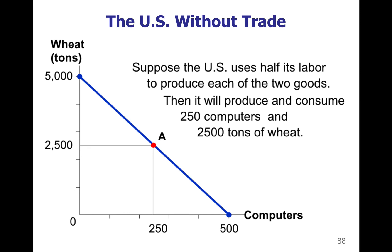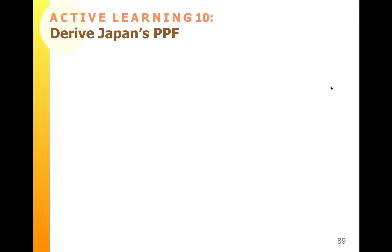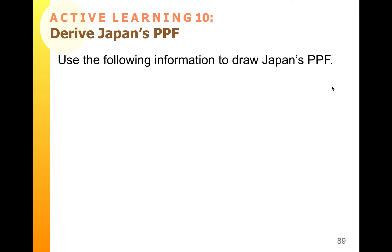So if we decide to trade with Japan, the U.S. would have to get more than 2,500 wheat and 250 computers in the trade for it to be beneficial for us. For your next active learning, label it active learning number 10. I'm going to give you the data for Japan and you're going to draw Japan's production possibility frontier.